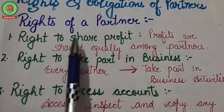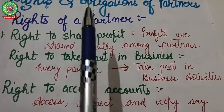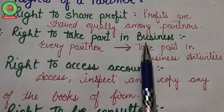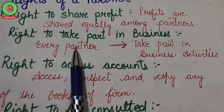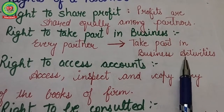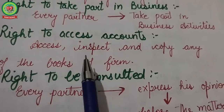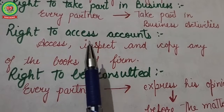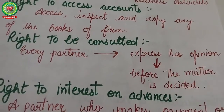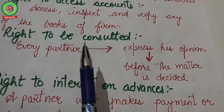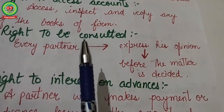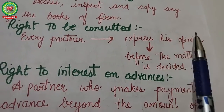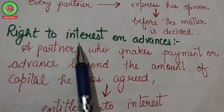Now the rights and obligations of partners. The first right is the right to share profits equally from the business. Next is the right to take part in business activities conducted in the partnership. Next is the right to assess accounts: every partner has the right to inspect any books of the organization. Next is the right to be consulted: every partner has the right to be consulted on all business matters and to express his opinion before a matter is decided.